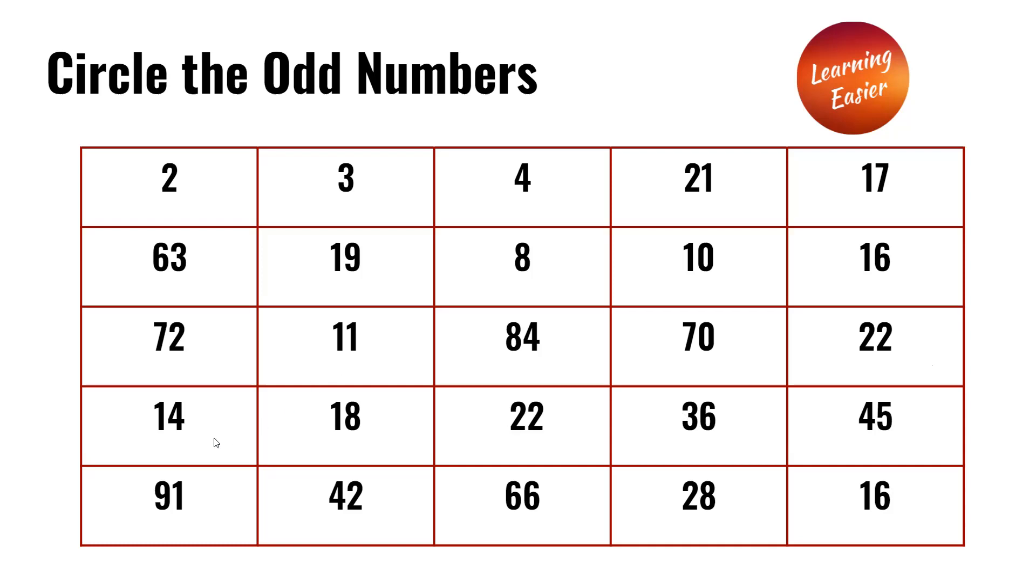Next in the fourth row we have 14, 18, 22, 36, and 45. Here 45 is the only odd number.